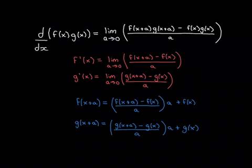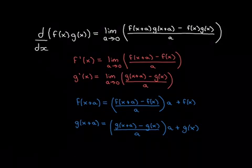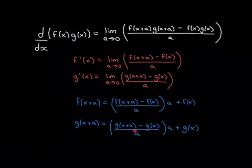Similarly for g(x+a), we can do exactly the same thing: write [g(x+a) − g(x)] / a, multiply by a to cancel the a, then add back g(x). Again, the reason we're doing this is because we want this derivative structure inside the limit, so that as a approaches 0 these expressions will turn into the derivatives.